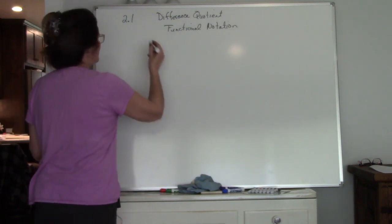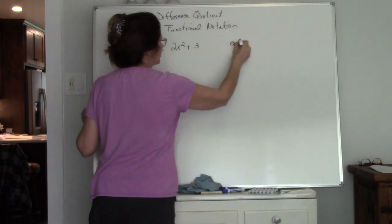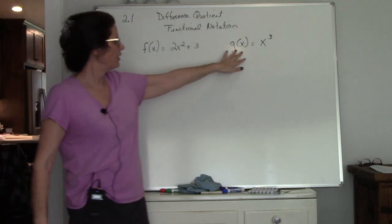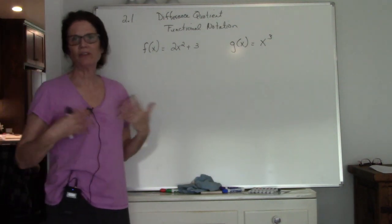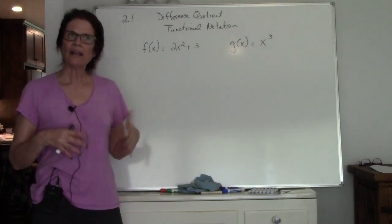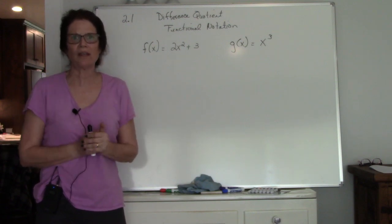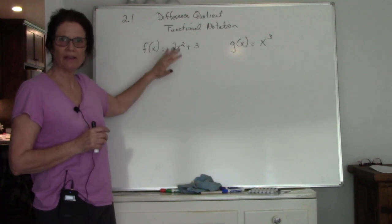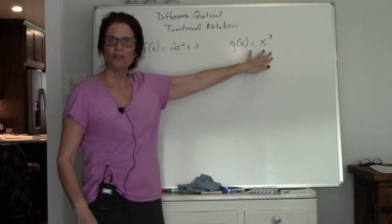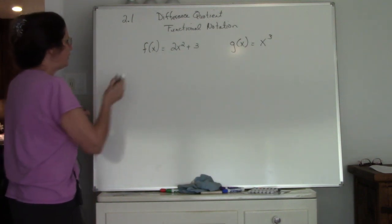Let's say I have two functions — the f function and the g function. The f function is 2x squared plus 3, and the g function is x cubed. What's nice about functional notation is it allows us to give it a name. So instead of saying 'the x cubed function,' I can say 'let's use the g function.' It's just a name — another way to say y — that makes it easier to identify which function we're using.